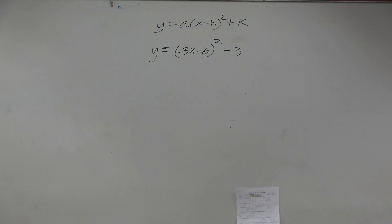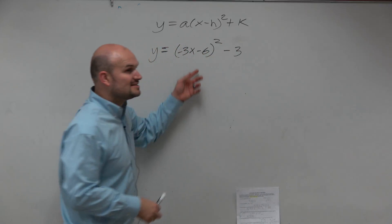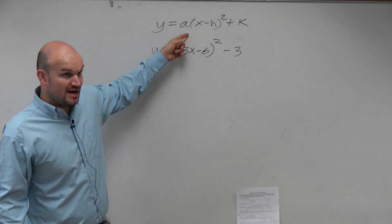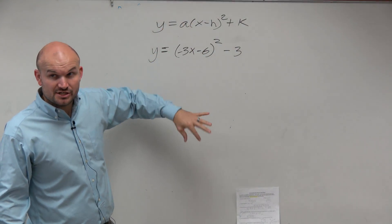So just remember a couple confusing things. When A is negative, that is what reflects across the x-axis, right? So that tells you the orientation of the reflection.